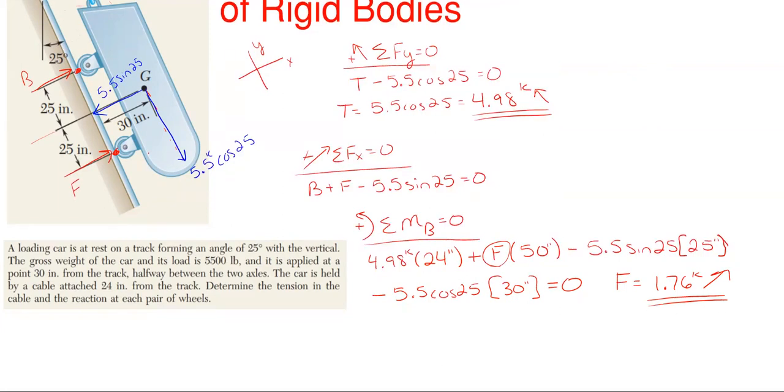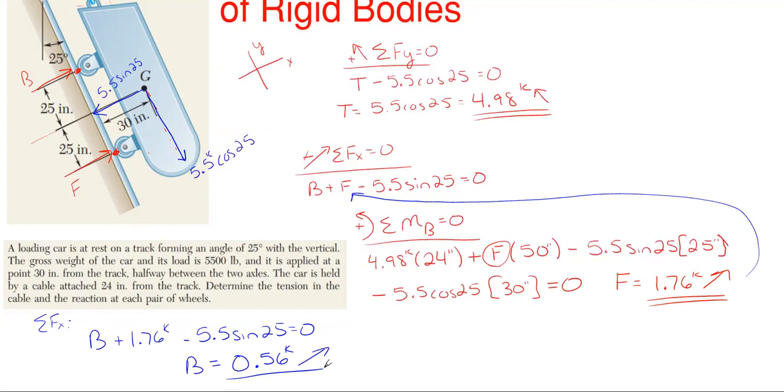Well with f known I can take this and come back to my x equation and plug it back in there. So once I do that from my x equation here I'm going to have b plus 1.76 kips minus 5.5 sine of 25 is equal to 0. Well b is the only unknown in here so I can rearrange and solve and that gives me 0.56 kips. Came out to be positive so I know that arrow direction that I drew at the beginning is the correct one. So those are all my answers. I have t up here, I have f right here, and I have b right here.